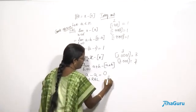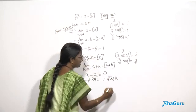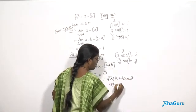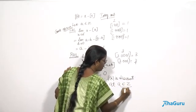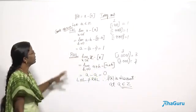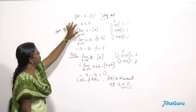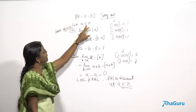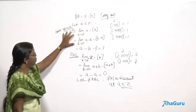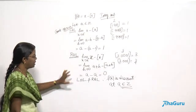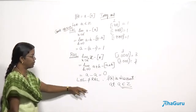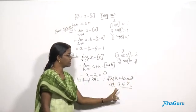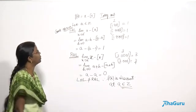The left-hand limit is 1 and the right-hand limit is 0 — they are not equal. Therefore, f(x) is discontinuous at 'a', for every point 'a' belonging to the set of integers. Since we started with 'a' as any integer and proved the left and right limits are different, the limiting value does not exist, and the function is not continuous at any integral value.